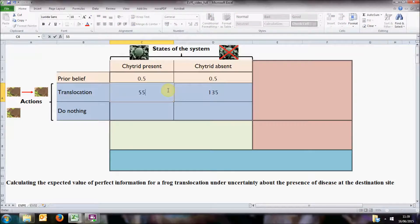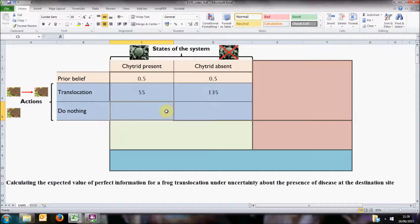On the other hand, if we choose not to translocate, then the outcomes will not depend on the presence of chytrid at the new site. And the model could predict that the existing population will maintain its current size.